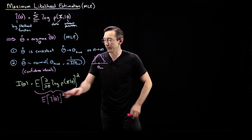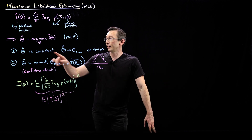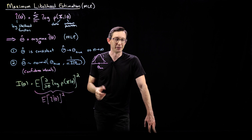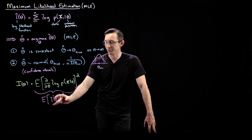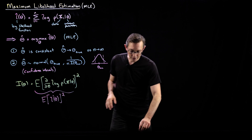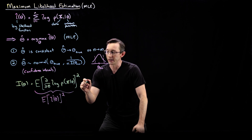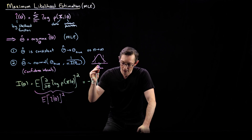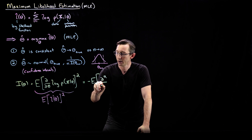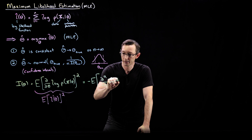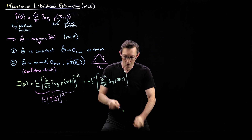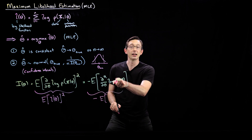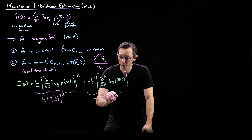That's what I of theta is — the expectation of L prime theta squared. Remember that the optimizing value theta hat maximizes L of theta, so L prime of theta equals zero there. You can start seeing that this is related to the optimization problem. And there's another useful property: this value I of theta is also equal to the negative expected value of the second partial derivative — partial squared with respect to theta — of log p of x given theta. I can write this as minus the expectation of L double prime of theta.